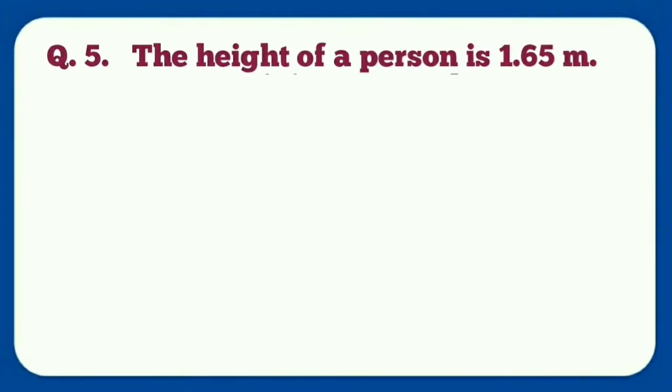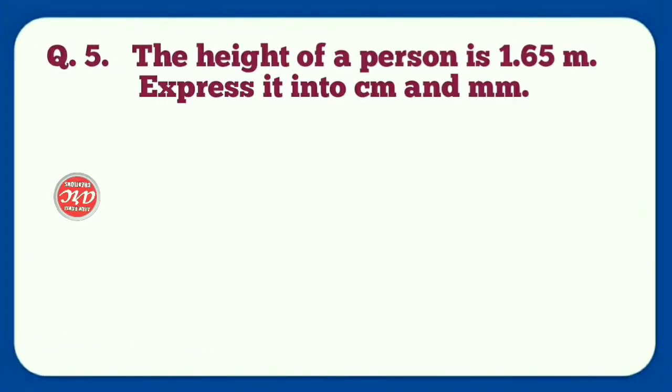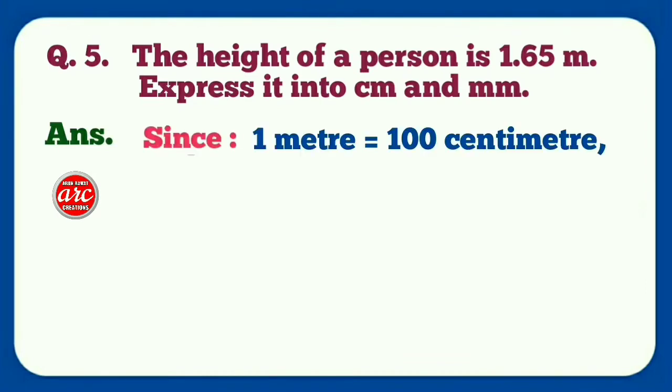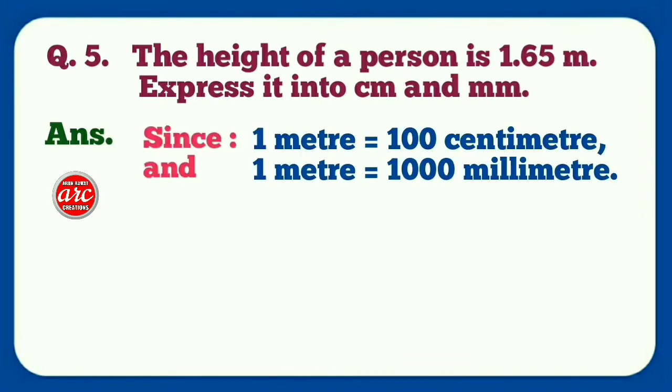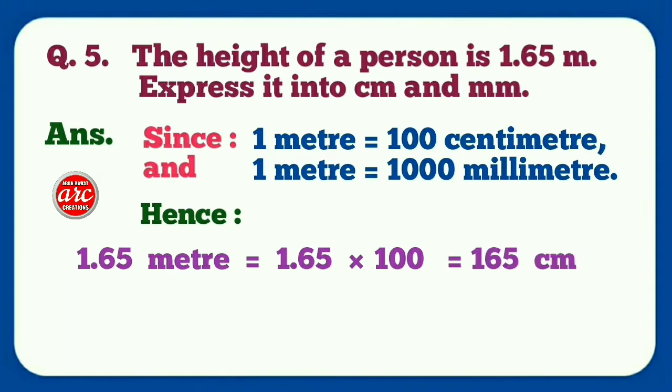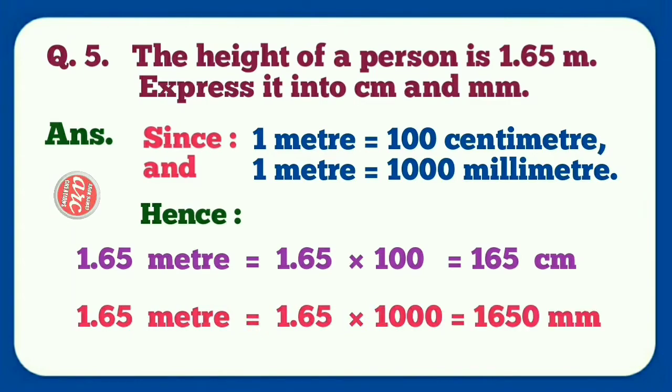Question number five: The height of a person is 1.65 meter. Express it into centimeter and millimeter. Answer: We know that one meter is equal to 100 centimeter. Also one meter is equal to 1000 millimeter. Hence 1.65 meter is equal to 1.65 into 100, that is 165 centimeter, and 1.65 into 1000, that is 1650 millimeter.